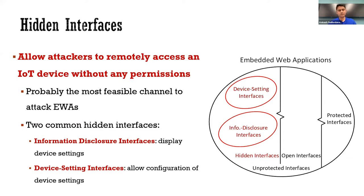An information disclosure interface displays sensitive information about the device. A device setting interface allows users to configure device settings without authorization. There are two types of interfaces in embedded web applications: protected interfaces and unprotected interfaces. Those two types of hidden interfaces are unprotected interfaces. The other type of unprotected interface is the open interface designed to be open to users, for example the login page.